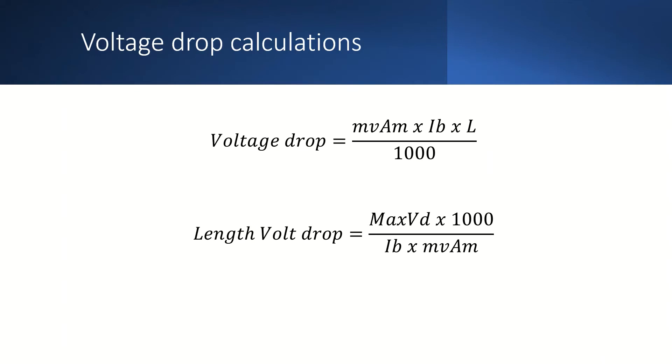Then divide by the design current and multiply by the value for millivolts per ampere per meter for the cable. That will give us the maximum circuit length to comply with the volt drop.